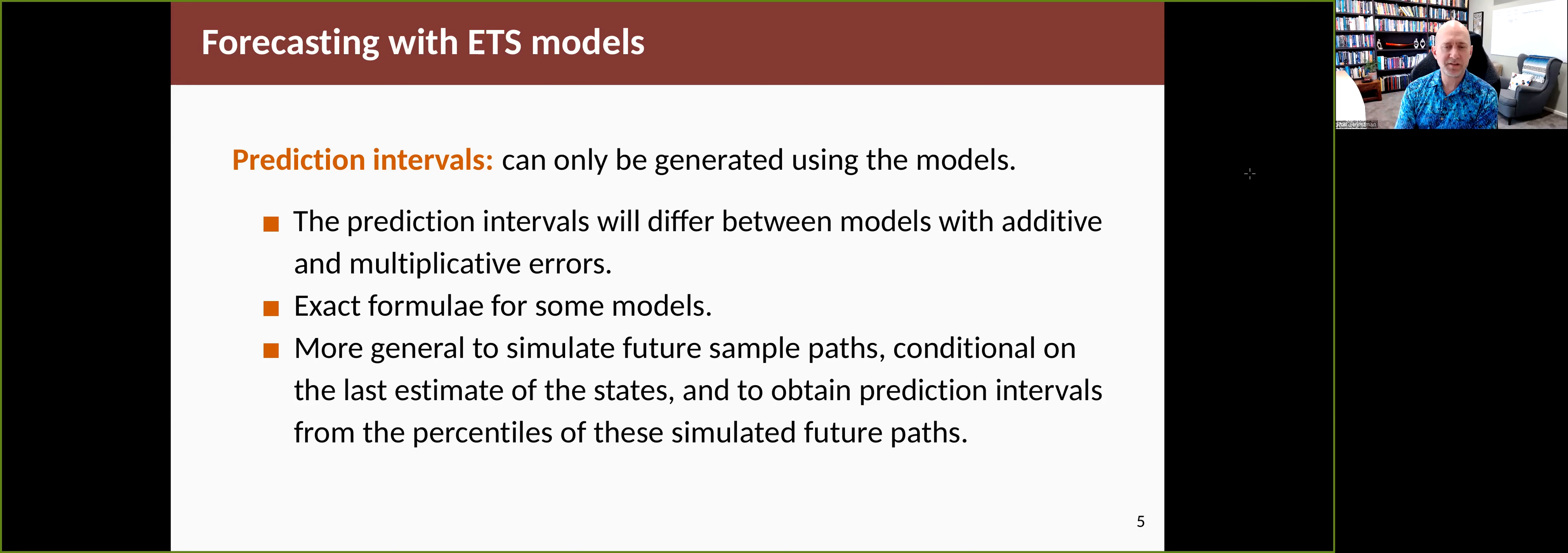For some models, we have not been able to derive exact formulas. For those models, we actually simulate future sample paths. You use the fitted model, condition on the last estimate of the states, and run it forward thousands of times, and you can estimate the prediction intervals from the percentiles. When Fable needs to do that, it will. When it knows the exact formula for the variance, it will use it to make it faster.